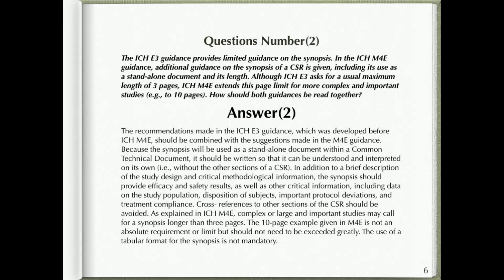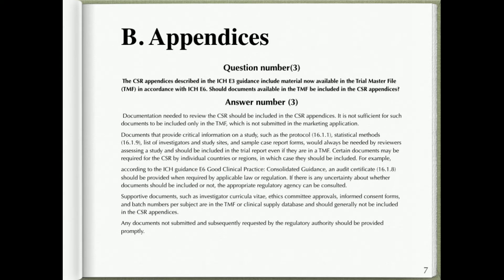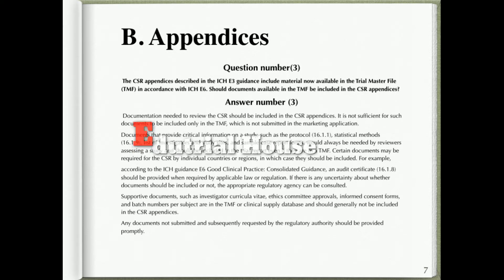Section B: Appendices. Question number three: The CSR appendices described in the ICH E3 guidance include material now available in the Trial Master File (TMF) in accordance with ICH E6. Should documents available in the TMF be included in the CSR appendices? Answer number three: Documentation needed to review the CSR should be included in the CSR appendices. It is not sufficient for such documents to be included only in the TMF, which is not submitted in the marketing application. Documents such as the protocol (16.1.1), statistical methods (16.1.9), list of investigators and study sites, and sample case report forms should always be included in the trial report.